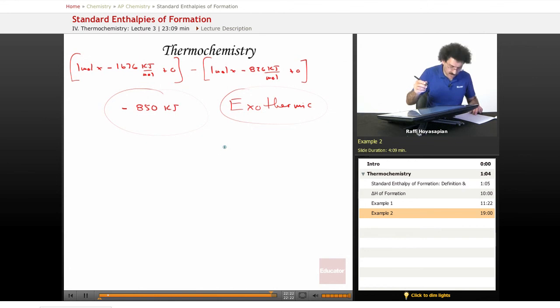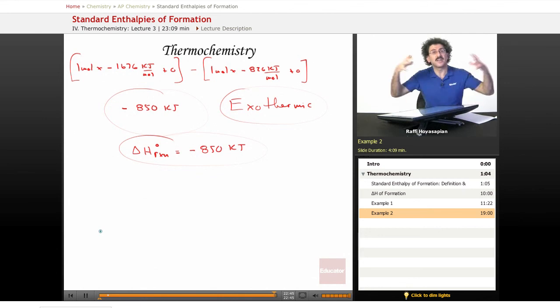So we found our delta H of the reaction is equal to minus 850 kilojoules. Notice delta H of reaction is in kilojoules, not kilojoules per mole. Kilojoules per mole is delta H of formation. That's what we used to get the delta H of the actual reaction.